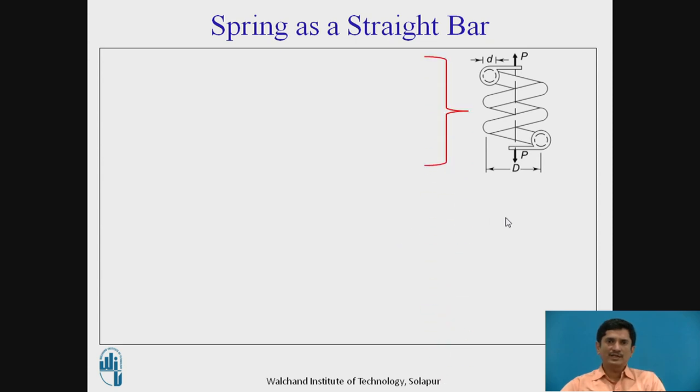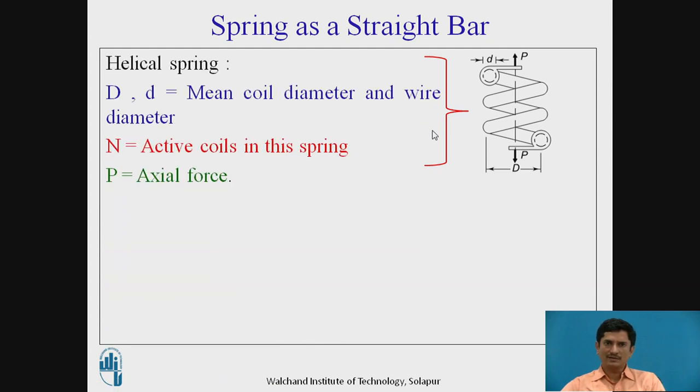Let us consider spring as a straight bar. This is a helical compression spring. For this spring, D and small d are the mean coil diameter and wire diameter respectively. This is wire diameter and the mean coil diameter. N are the total number of turns and P is the axial force applied on the spring.